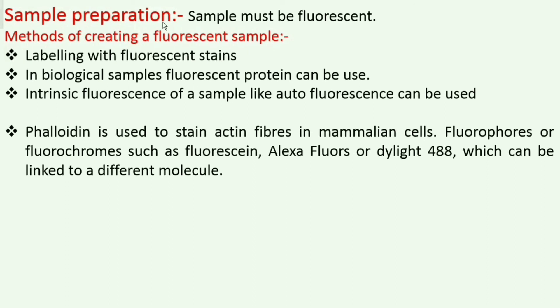Phalloidin is used to stain actin fibers in mammalian cells. Fluorophores or fluorochromes such as fluorescein, Alexa Fluor, or Alexa Fluor 488 can be linked to different molecules to make the sample fluorescent.